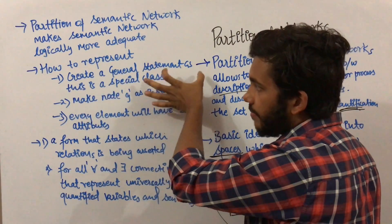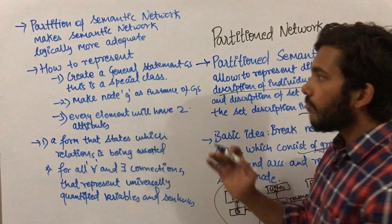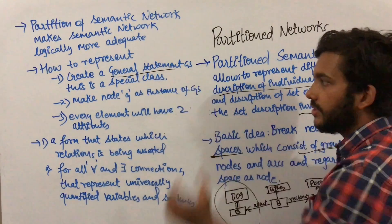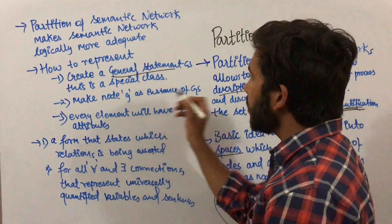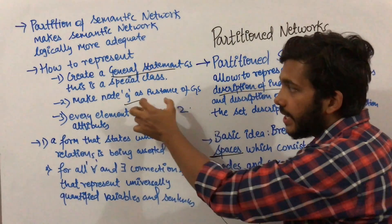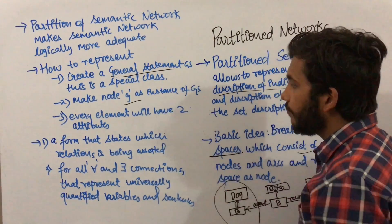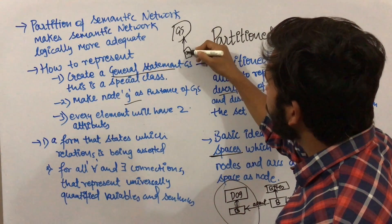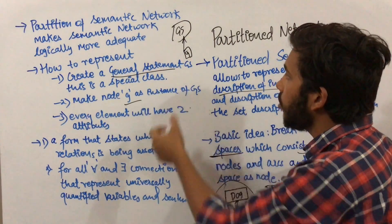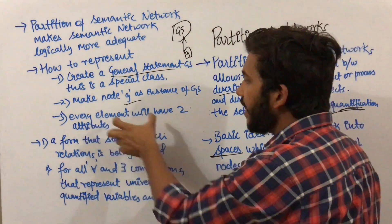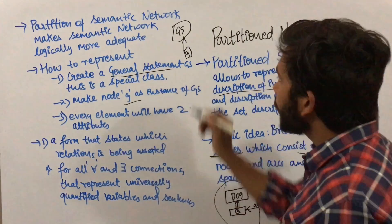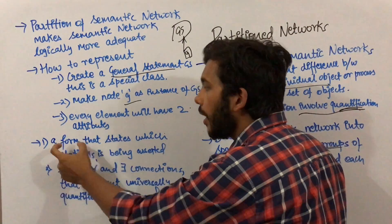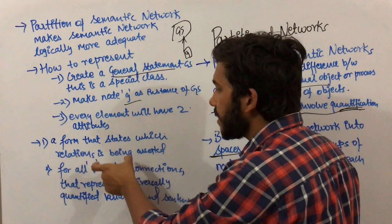To represent a partition network, first create a general statement GS — this is a special class. Then make a node G as an instance of GS, meaning G is an example of the general statement. Every element in the partition network will have two attributes: first, a 'form' attribute that states which relation is being asserted.